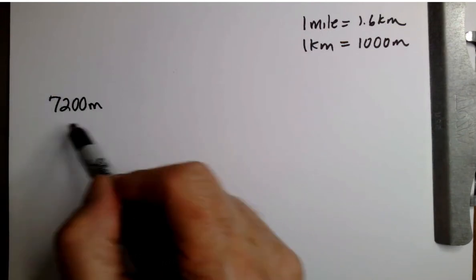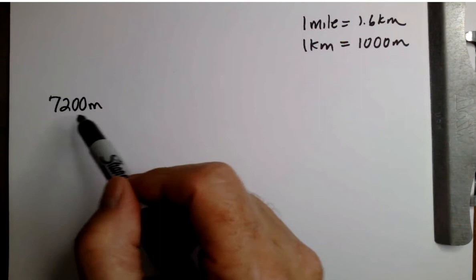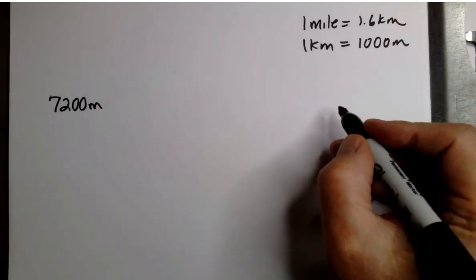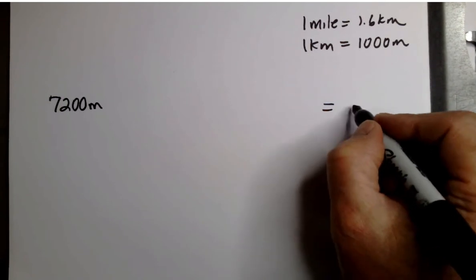So my question is, 7200 meters, how many miles does that convert to? So let's look at that.